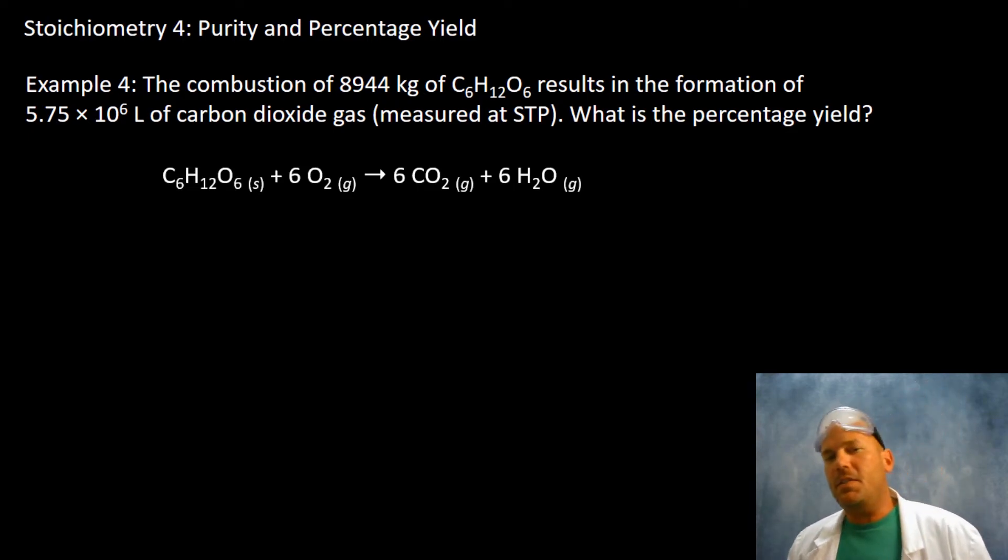You probably have this equation memorized from last year. So combustion of glucose to yield carbon dioxide, we have a one to six to six to six mole ratio in this case here. And we have a lot of the glucose being converted and it's forming this many liters of CO2. So our stoichiometry is going to - well, what is this number? That's the amount that's actually produced. We want to know the theoretical yield so that way we can calculate the percentage yield. How do we do that? We use stoichiometry to do that.